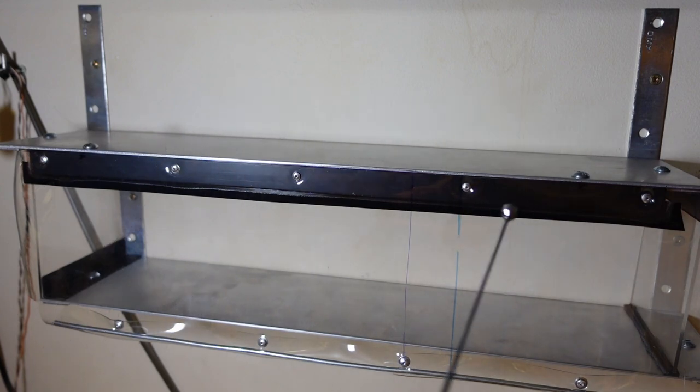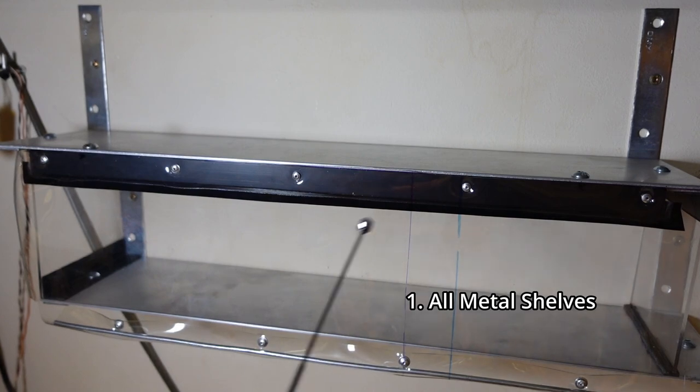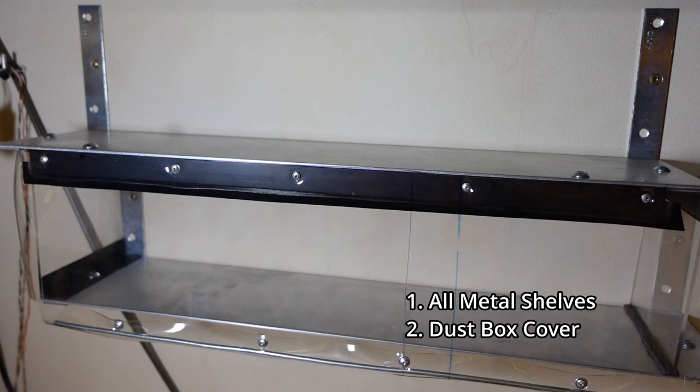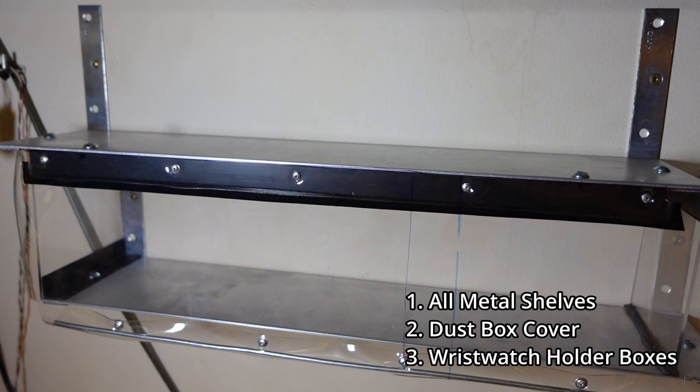First one is about just the shelves, so ignore the plastic stuff. Then it will be about specifically the plastic part which is a dust cover system, dust box I would call it. And last thing which you've seen in the thumbnail will be about the boxes holders for the wristwatches.